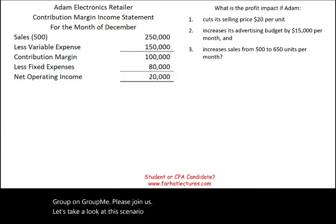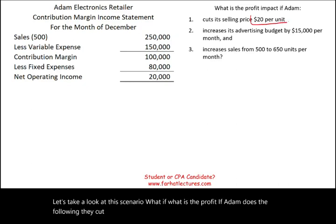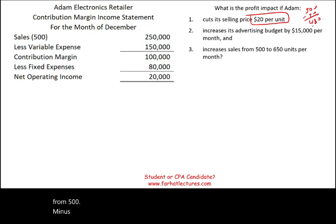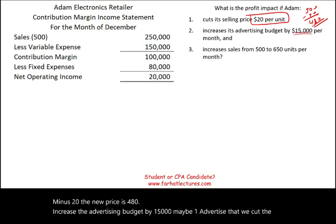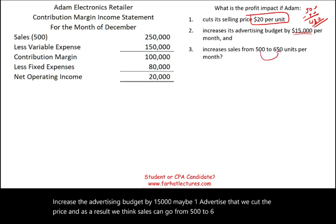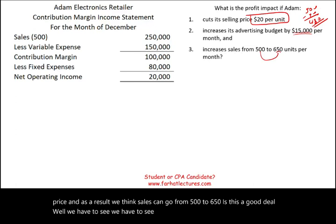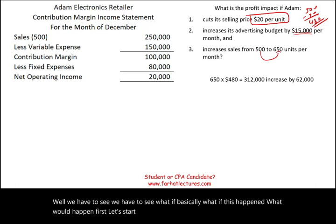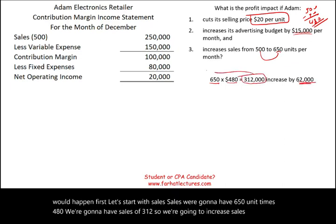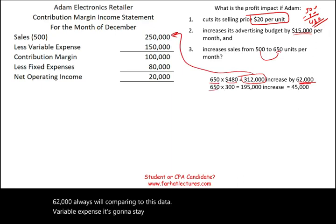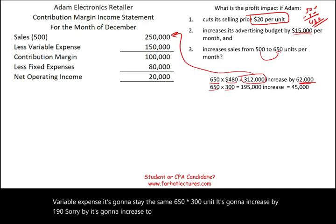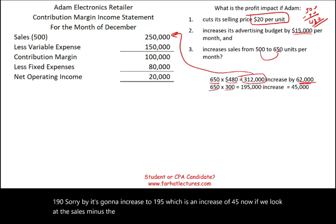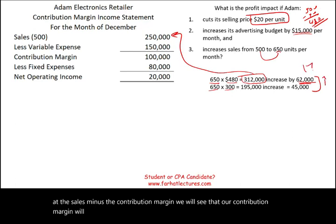Next scenario: what is the profit impact if Adam cuts the selling price by $20 (new price = $480), increases the advertising budget by $15,000, and as a result sales increase from 500 to 650 units? Sales: 650 × $480 = $312,000, an increase of $62,000. Variable expense: 650 × $300 = $195,000, an increase of $45,000. Contribution margin increases overall by $17,000.